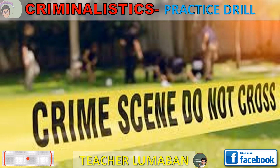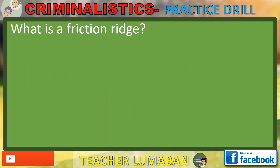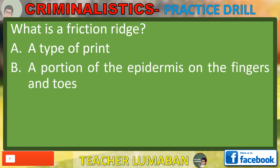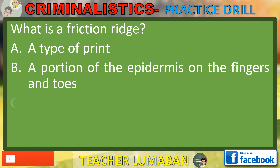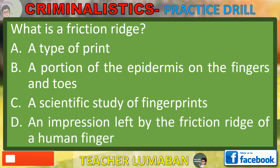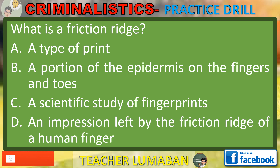What is a friction ridge? Letter A: A type of print. Letter B: A portion of the epidermis on the fingers and toes. Letter C: A scientific study of fingerprints. Letter D: An impression left by the friction ridge of a human finger. Choose the suitable answer based on the given choices.